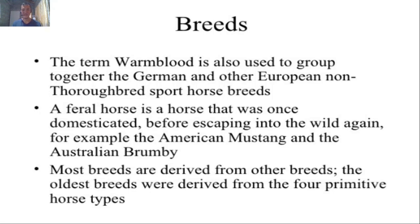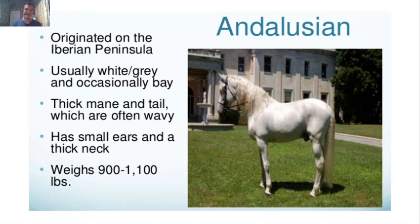A feral horse is a horse that was once domesticated before escaping into the wild — for example, the American Mustang and Australian Brumby. Most breeds are derived from other breeds. The oldest breeds were derived from four primitive horse types. First is the Andalusian, which originated on the Iberian Peninsula. It is usually white or gray, and occasionally bay, with a thick mane and often wavy tail.